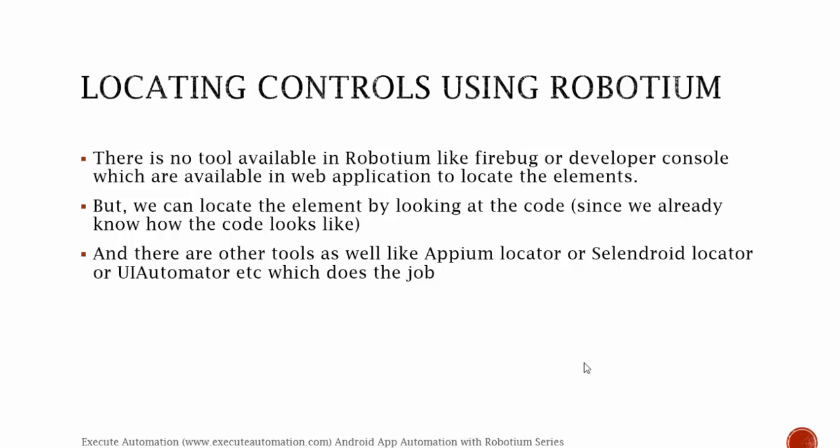We can locate the element by looking at the code, since we already know how the code looks like in the application under test. There are other tools as well like Appium locator, Selendroid locator, or UI Automator locator which do the job, but in Robotium we don't have such locators. We'll discuss Appium locator, Selendroid locator, and UI Automator in upcoming videos, but for now just keep in mind that in Robotium there is no such locator available.